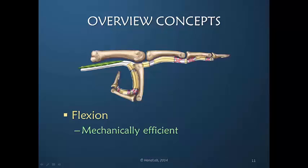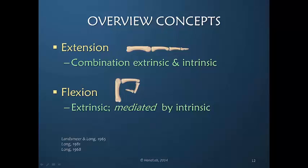Flexors are also, in addition to being very strong, very mechanically efficient because of the pulley system within the finger. What happens during extension is we have a combination of the extrinsic — meaning the extensor digitorum communis — and the intrinsic, which is the lumbrical and interosseous muscles. During flexion we might think it's purely extrinsic, but the ability to flex the finger is mediated, controlled, or modulated by the intrinsic muscles in the dorsal apparatus. So flexion is not an isolated event when just the flexor muscle tendon units are moving.